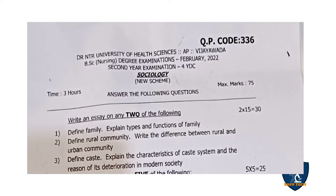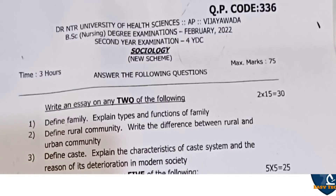The first section is the essay section — write an essay on any two of the following. 2 into 15 is equal to 30 marks.